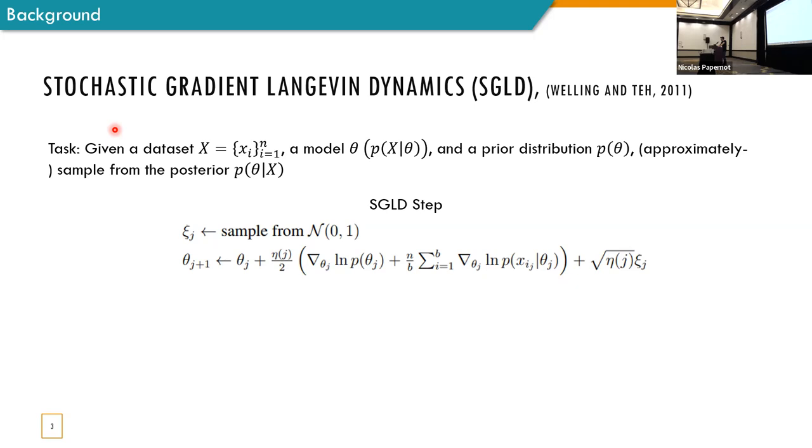So how does SGLD do that? It's an iterative algorithm, such that in each iteration, we select a batch of samples and perform the SGLD step we can do here. And I won't go into the details of this step. Instead, I'll tell you that it can be seen as stochastic gradient ascent with Gaussian noise. This is the noise, where the variance of the noise is calibrated to the step size.